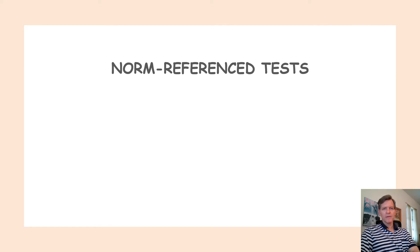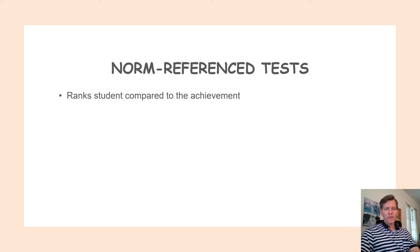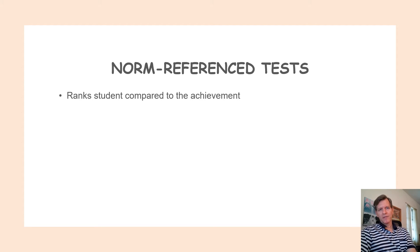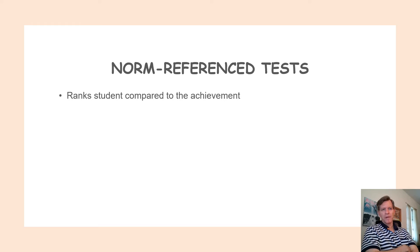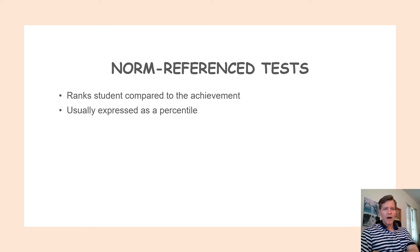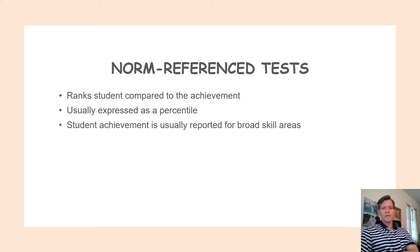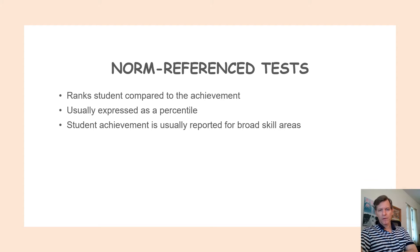Next, let's get into norm-referenced tests. Norm-referenced tests basically rank students compared to a level of achievement — for example, scoring in the 95th percentile of reading skill, meaning better than 95% of other students who took that test at a certain grade level. That is often expressed as a percentile. Student achievement is usually reported in broad skill areas such as phonics, vocabulary, literacy overall, or reading comprehension overall.